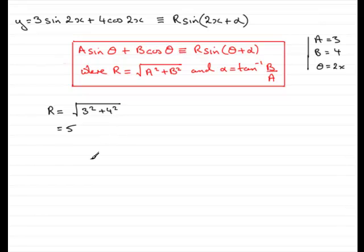When it comes to alpha, alpha equals the inverse tan of b over a. So we've got the inverse tan of 4 divided by 3.